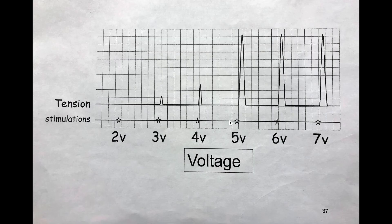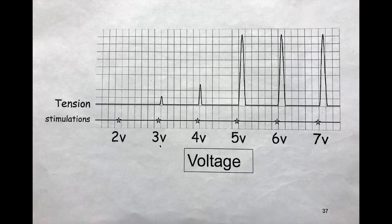On our lab manual chart, we turned up the voltage to three volts and zapped the muscle. What happened? We developed tension — that muscle actually contracted in response to this amount of voltage. So on this specific example, three volts represents threshold stimulus, meaning three volts is the lowest amount of voltage required to stimulate a muscle contraction.